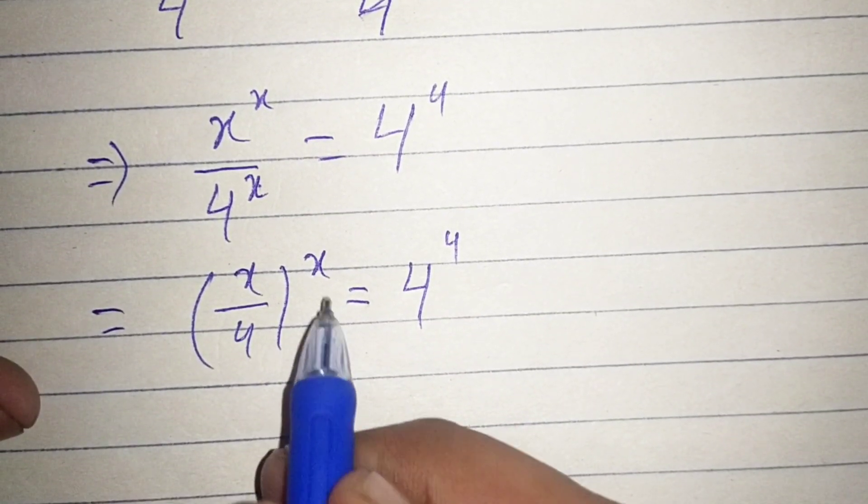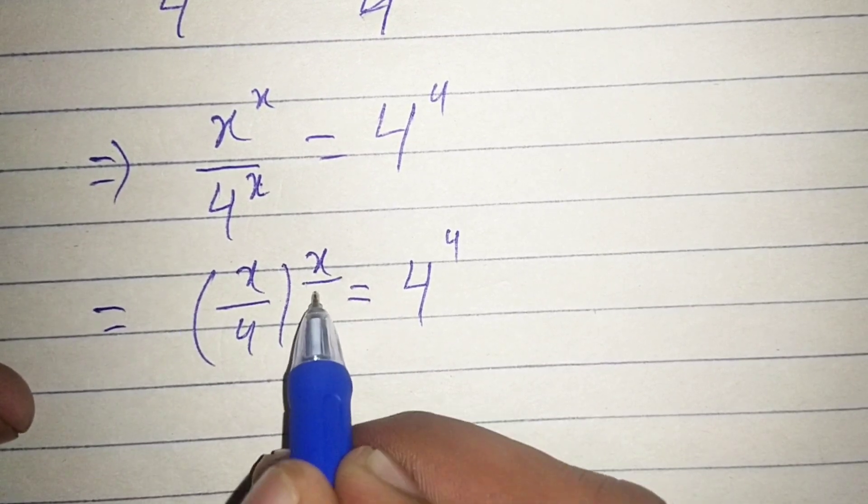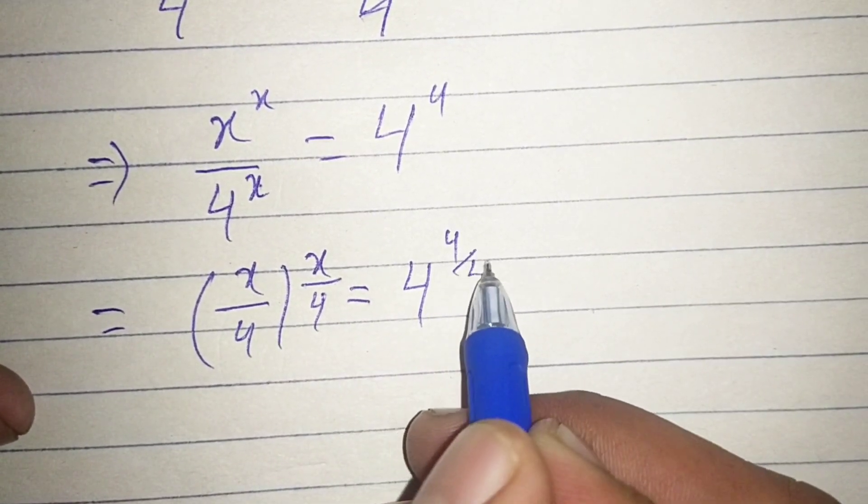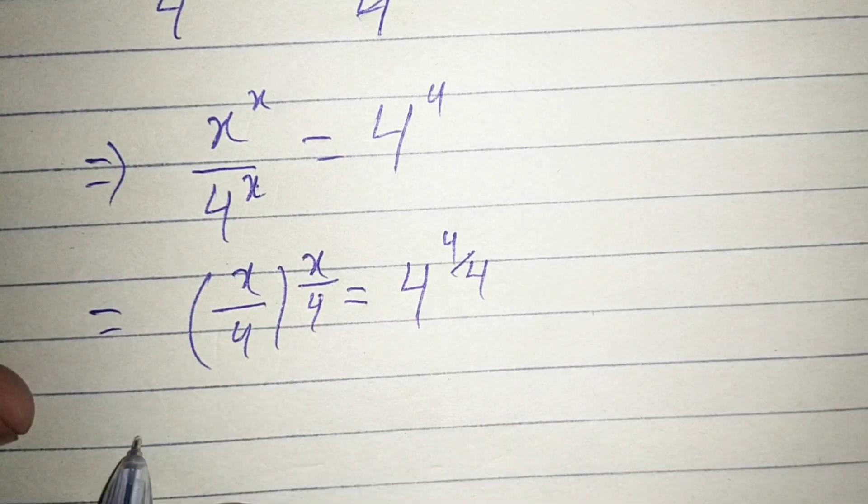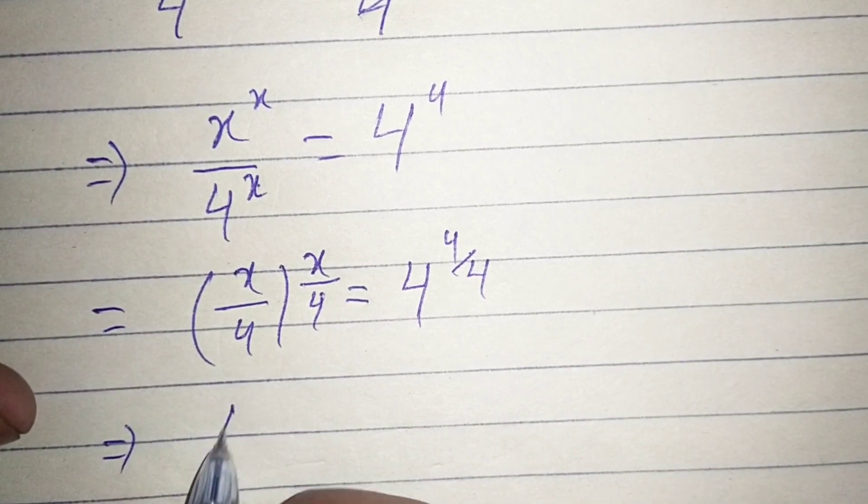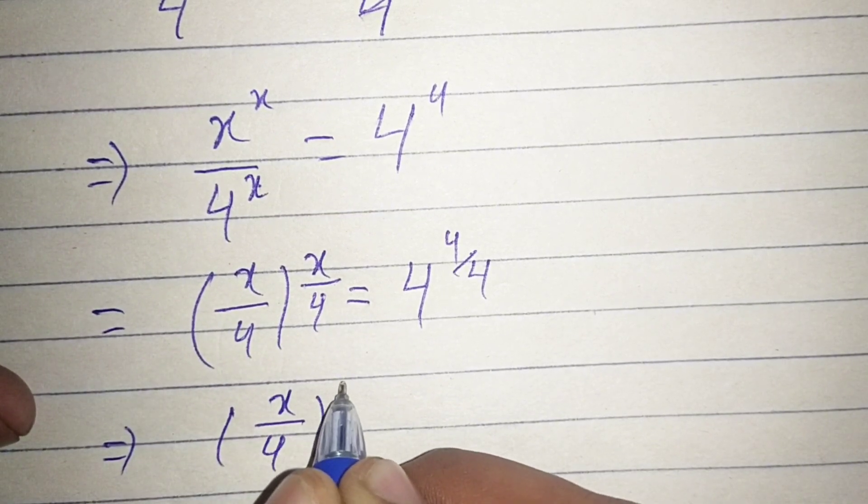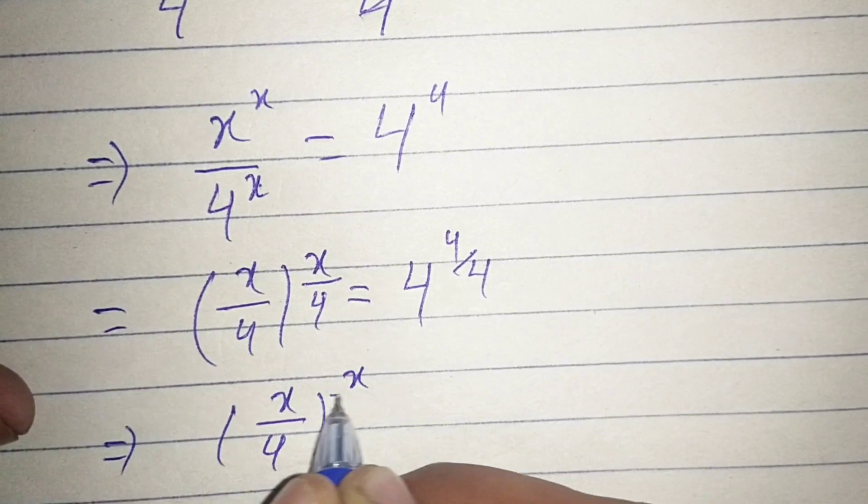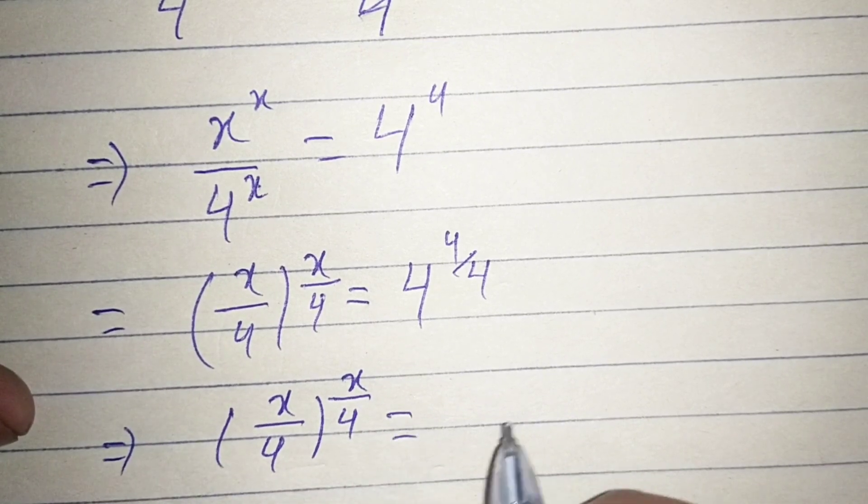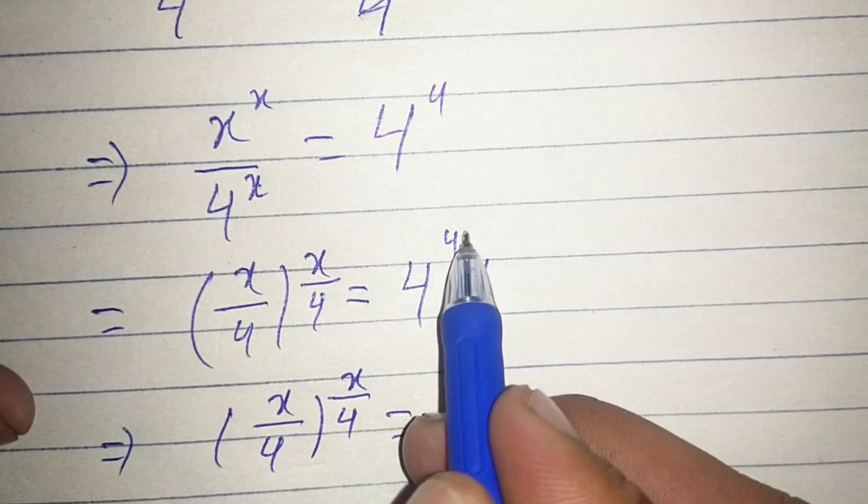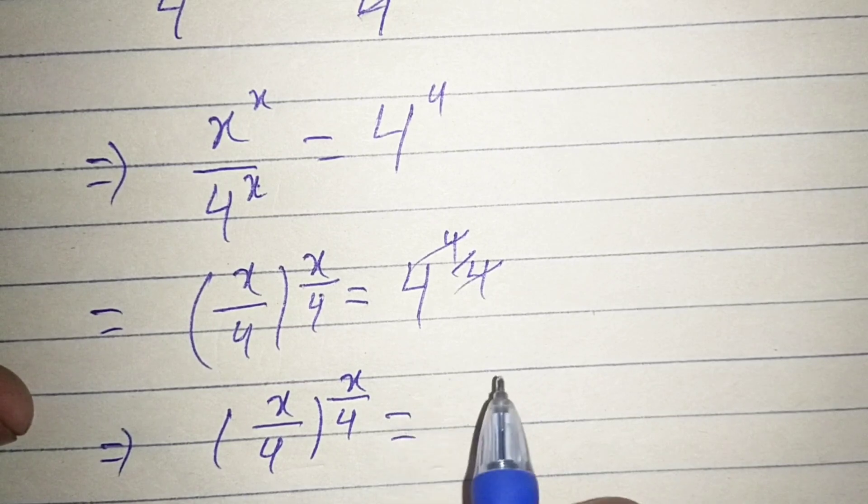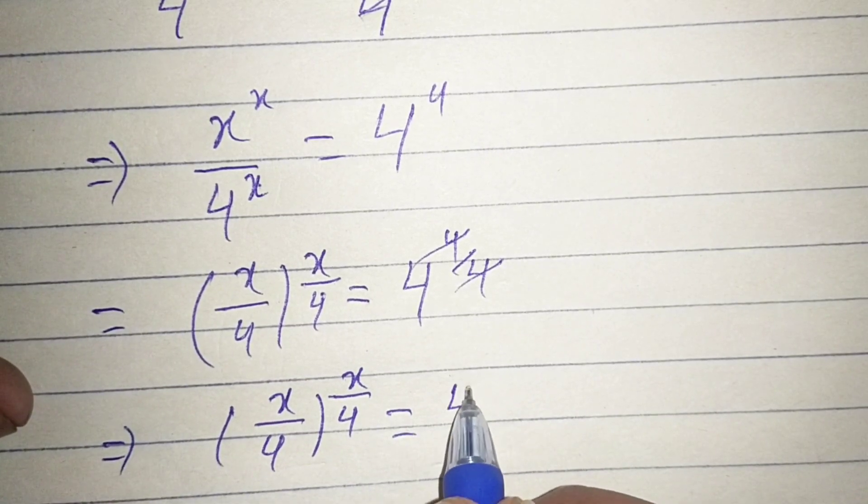Now divide both exponent by 4. So it will become x by 4 to the power x by 4 equals, this power will be cancelled with this one, we have 4 left.